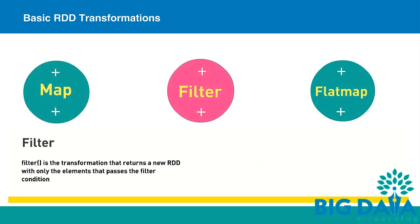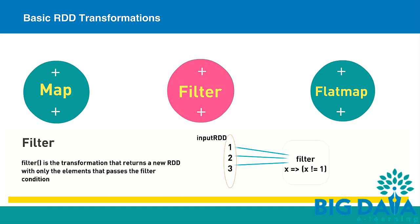Filter is a transformation that returns a new RDD with only the elements that pass the filter condition. If input RDD contains values 1 to 3, then applying transformation to filter elements that are not 1 will return only 2 and 3 as the resultant RDD.